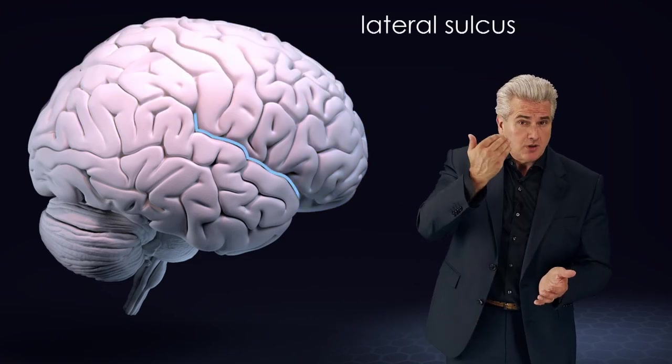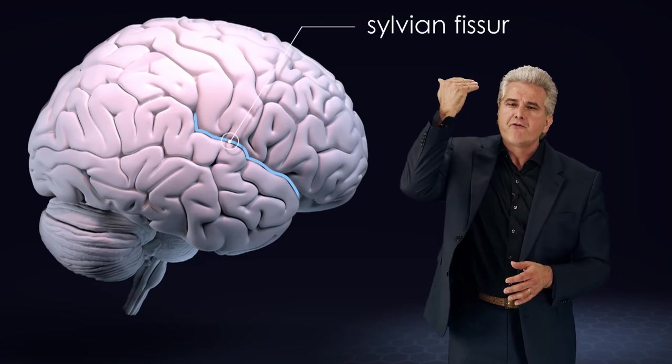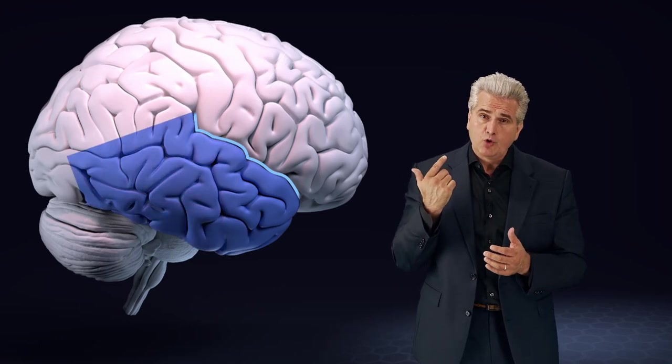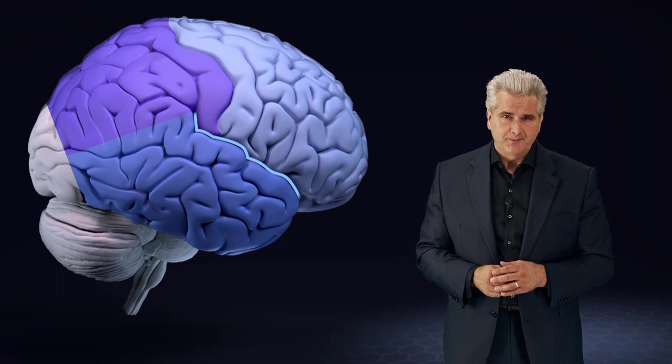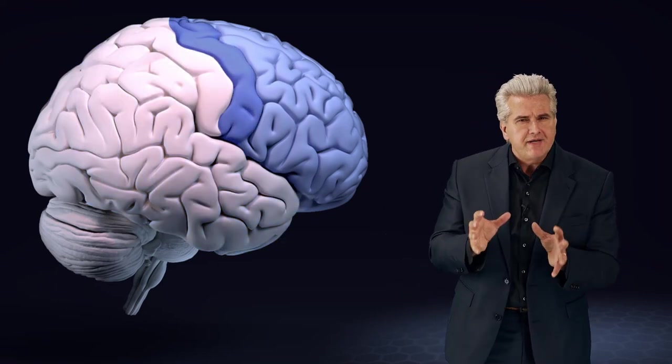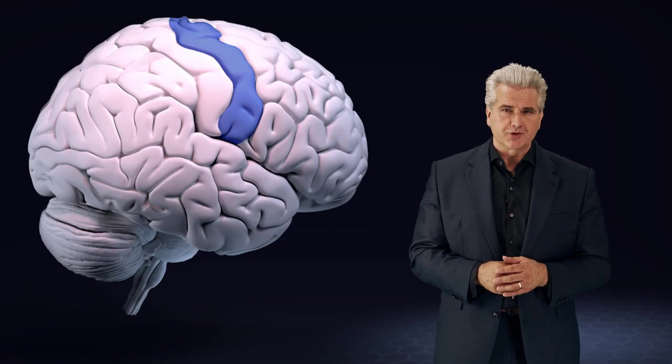The lateral cerebral sulcus, also named sylvian fissure, demarcates the temporal lobe from the frontal and parietal lobe. The frontal lobe contains the precentral gyrus, which constitutes the primary motor region of the brain.